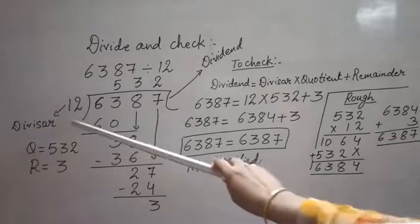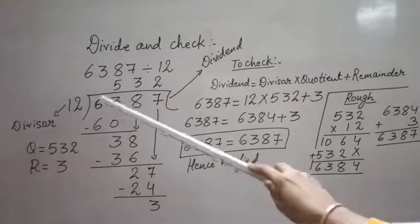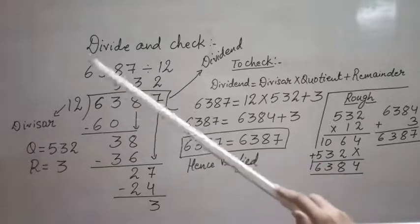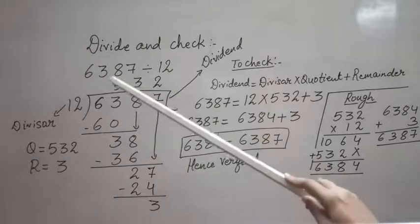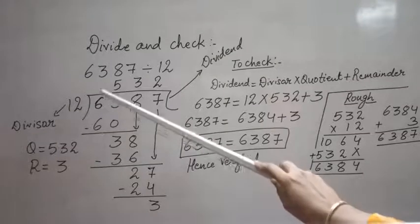...that when we have a two-digit divisor, we need to consider the two digits of the dividend in the beginning only. That is, here I will be taking two digits, 6 and 3, of the dividend, so my number will be 63.